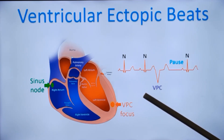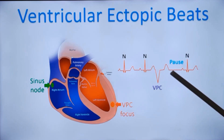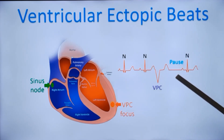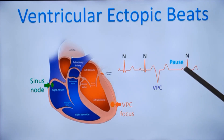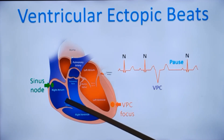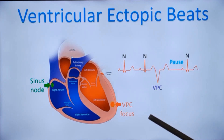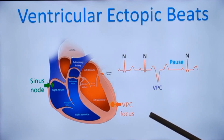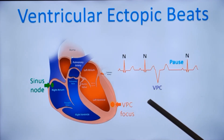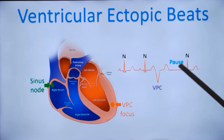In case of an atrial ectopic, the pause will be less than compensated, so the next sinus beat will come earlier. That is because an atrial ectopic from the upper part gets conducted back to the sinus node and resets the sinus cycle so that it restarts again earlier. That is why you have a less than fully compensated pause for an atrial or supraventricular ectopic, while for a ventricular ectopic it is a fully compensated one.